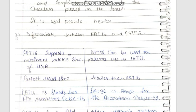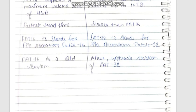The next question is to explain the difference between FAT16 and FAT32. FAT stands for File Allocation Table. FAT16 supports a maximum volume size of 4GB. FAT16 is an older version, while FAT32 is the newer version with improved capacity.